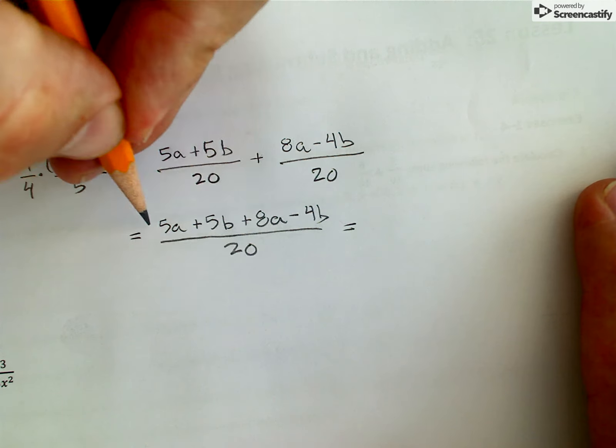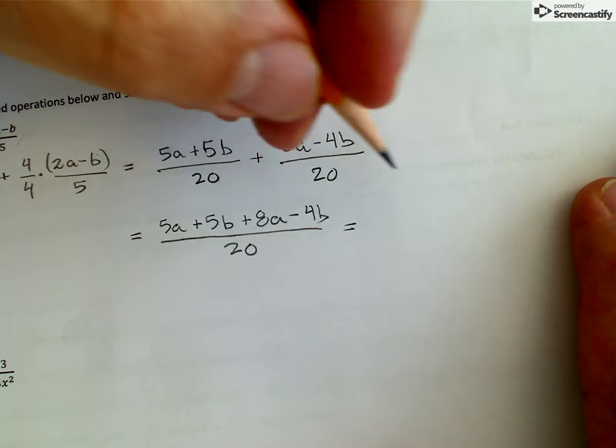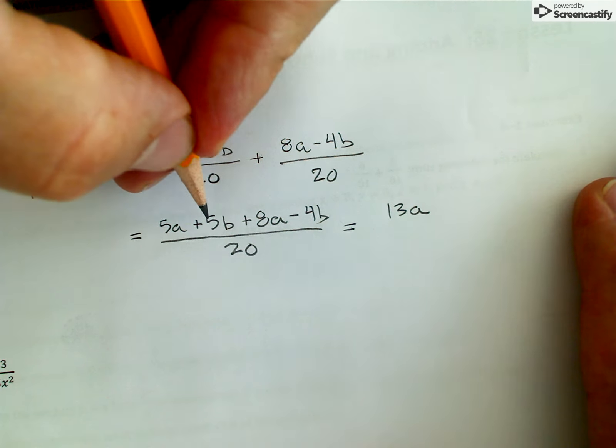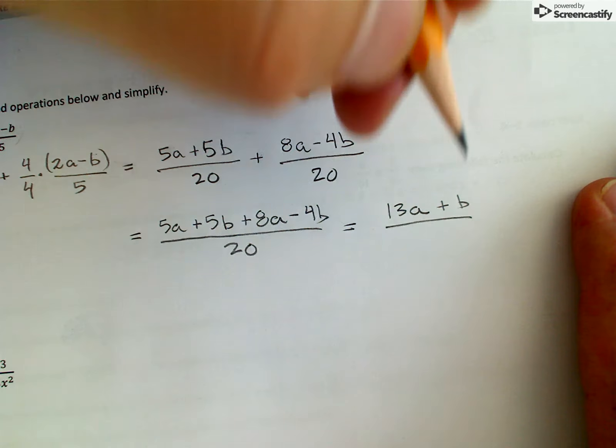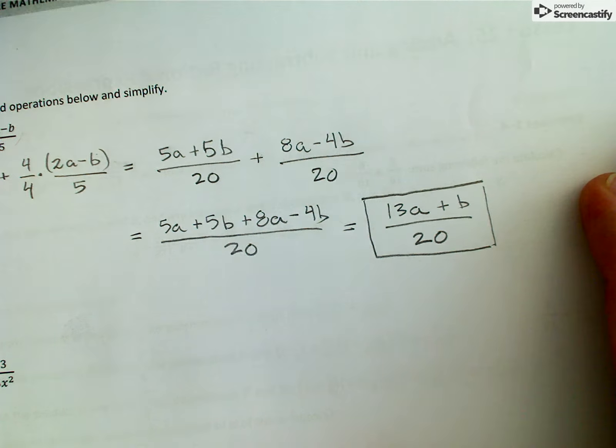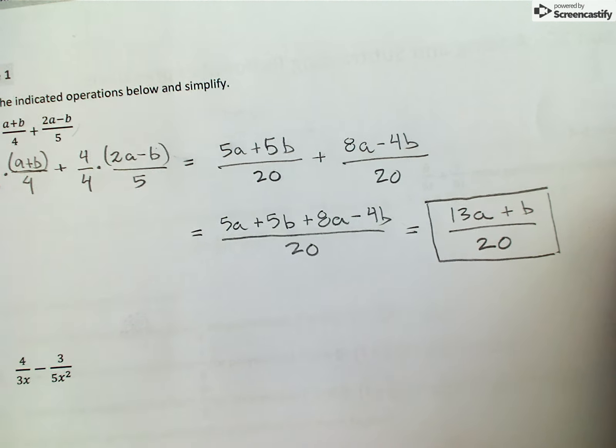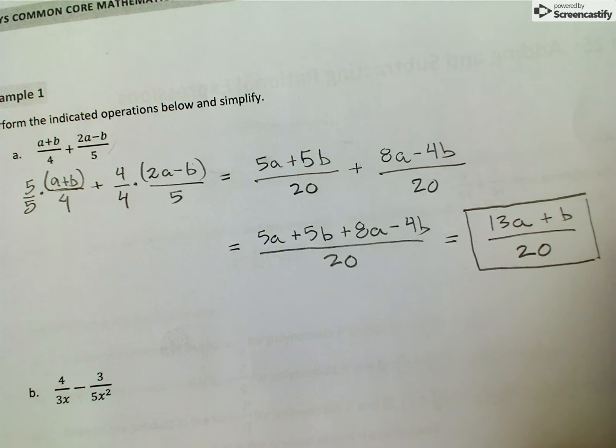And the last thing I can do is combine like terms on the top. 5a and 8a together make 13a, and 5b minus 4b leaves me with just a single positive b. And that is the sum of these two rational expressions.